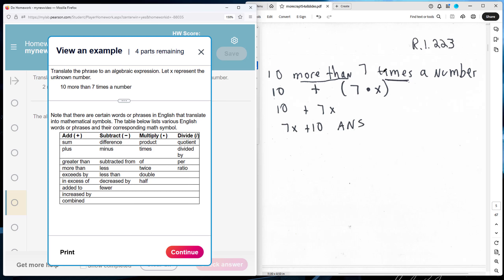More than, and we see times. We see that more than is a code for addition, and times is a code word for multiplication.